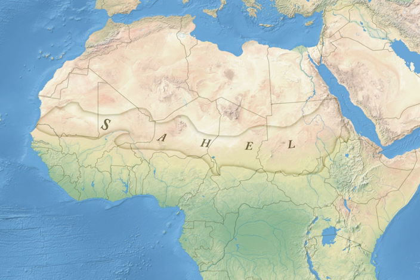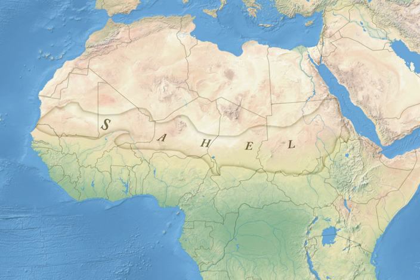The Sahel is mostly covered in grassland and savannah, with areas of woodland and shrubland. Grass cover is fairly continuous across the region, dominated by annual grass species such as Cencrus biflorus, Schoenfeldia gracilis, and Aristida stypoides. Species of acacia are the dominant trees, with Acacia tortilis the most common, along with Acacia senegal and Acacia laeta. Other tree species include Commiphora africana, Balanites aegyptiaca, Faidherbia albida, and Boscia senegalensis.